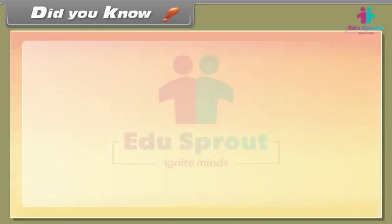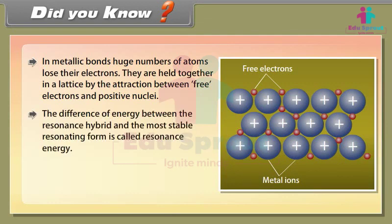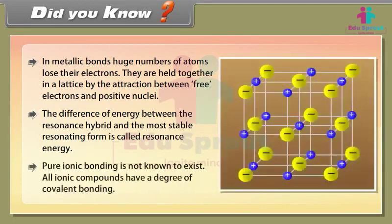Did you know? In metallic bonds, a huge number of atoms lose their electrons and are held together in a lattice by the attraction between free electrons and positive nuclei. The difference of energy between the resonance hybrid and the most stable resonating form is called resonance energy. Pure ionic bonding is not known to exist — all ionic compounds have a degree of covalent bonding.